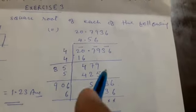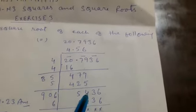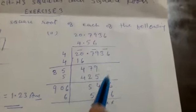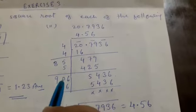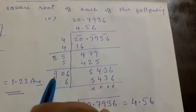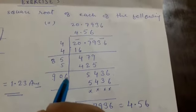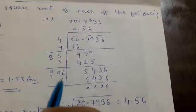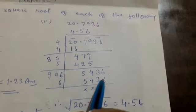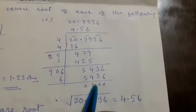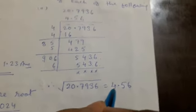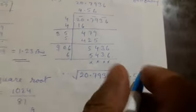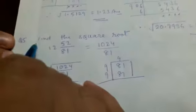We bring down 79 to get 479. We add 4 plus 4 to get 8, then multiply by 5: eighty-five times 5 is 425. After subtracting we get 54, then bring down 36 to get 5436. Adding 5 plus 5 gives 10, carry gives 9, and ninety-six times 6 equals 5436. The square root of 20.7936 is equal to 4.56.